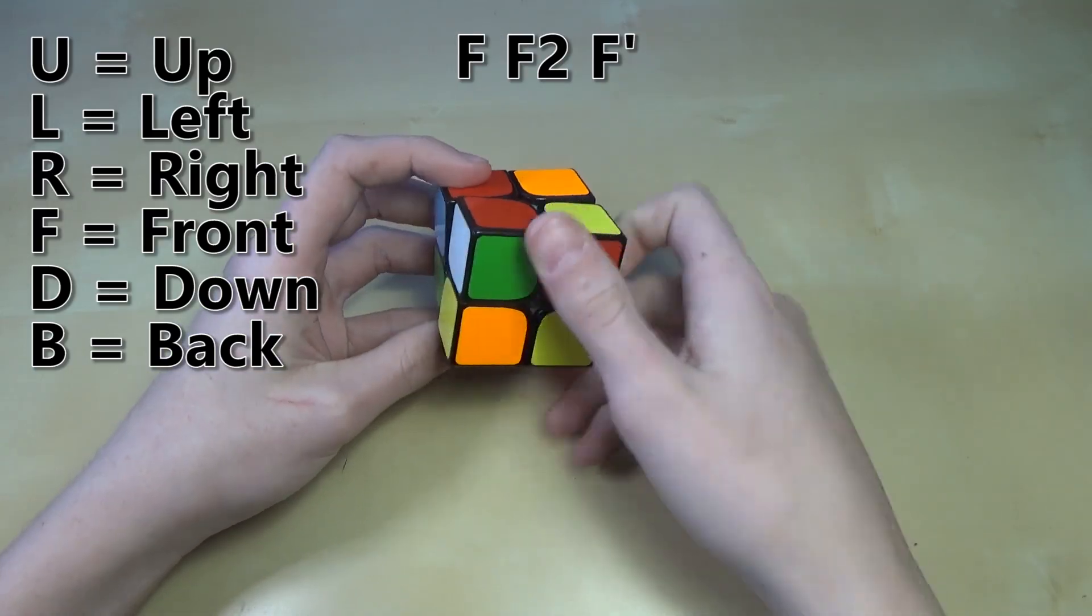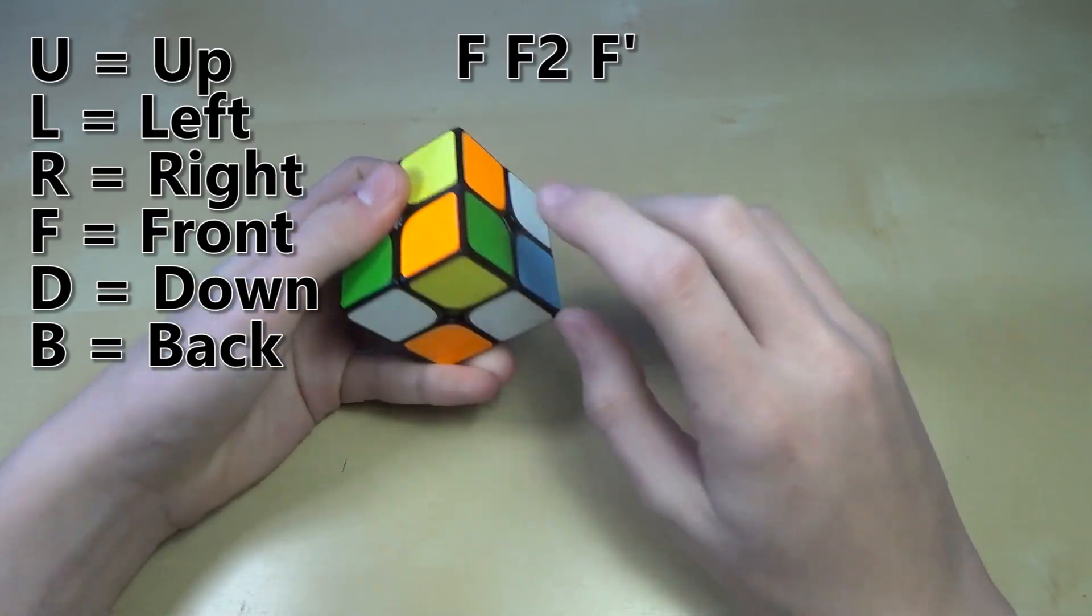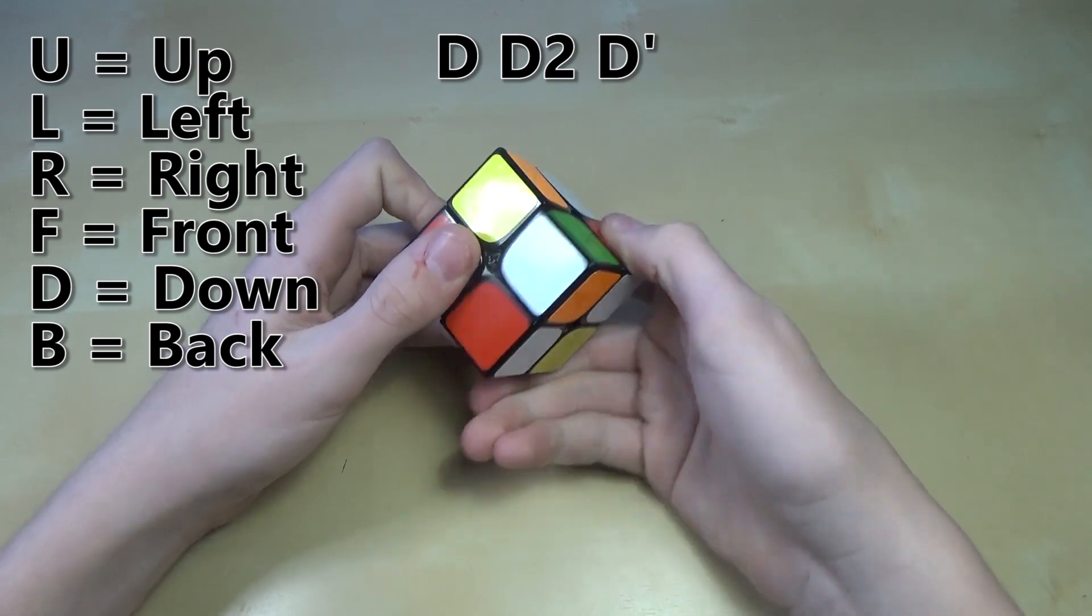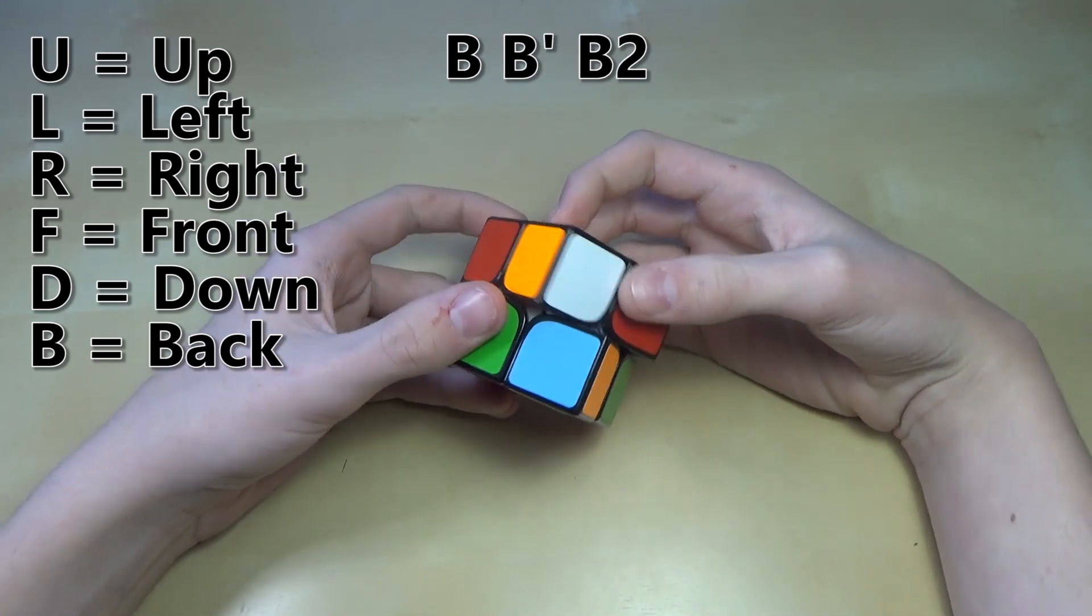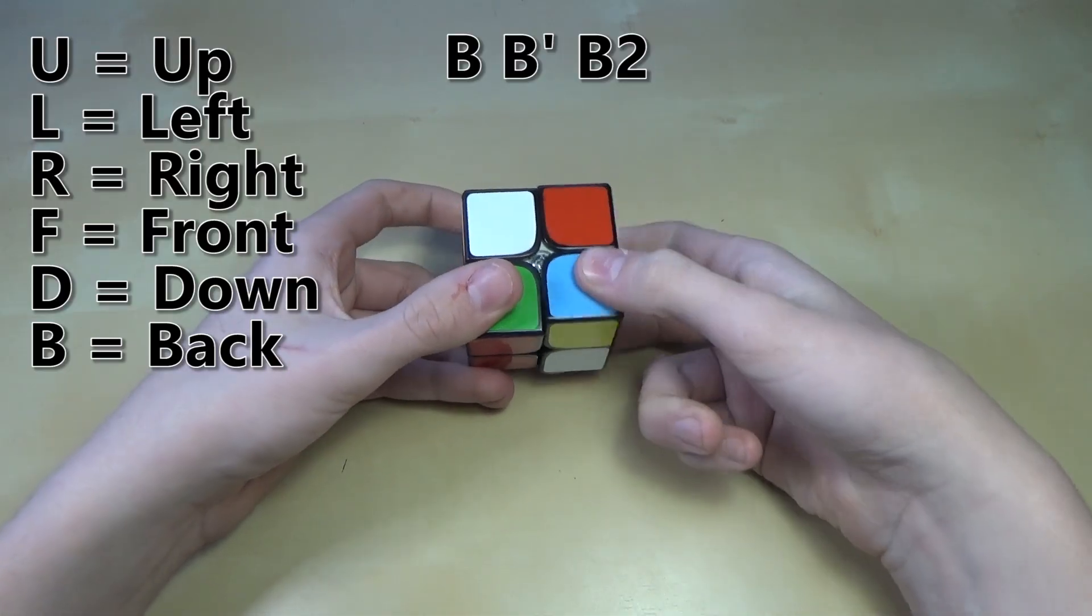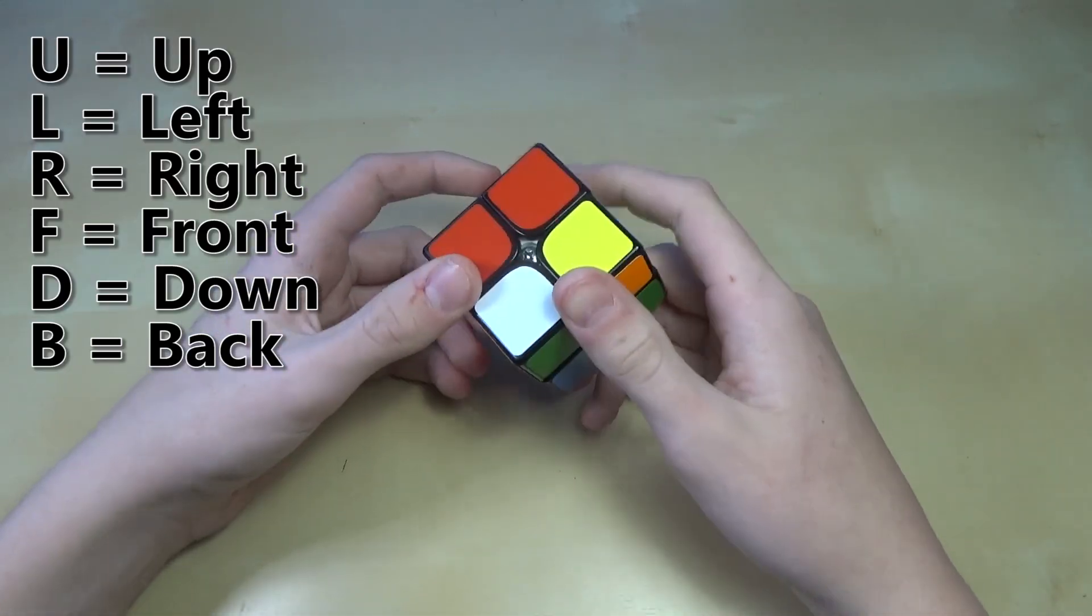F, F2, F prime, that's front. D is like this. That's down. D2, D prime. And then B is back. So that's B, B prime, B2. So now that we got that down, let's begin.